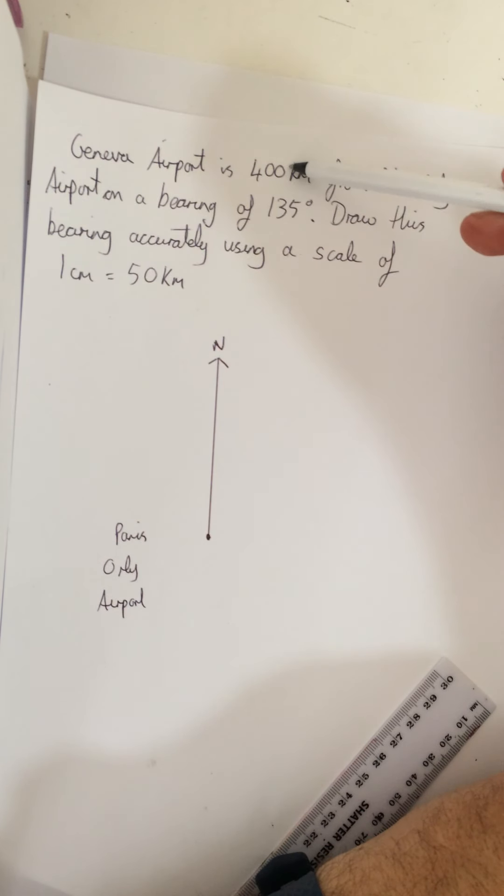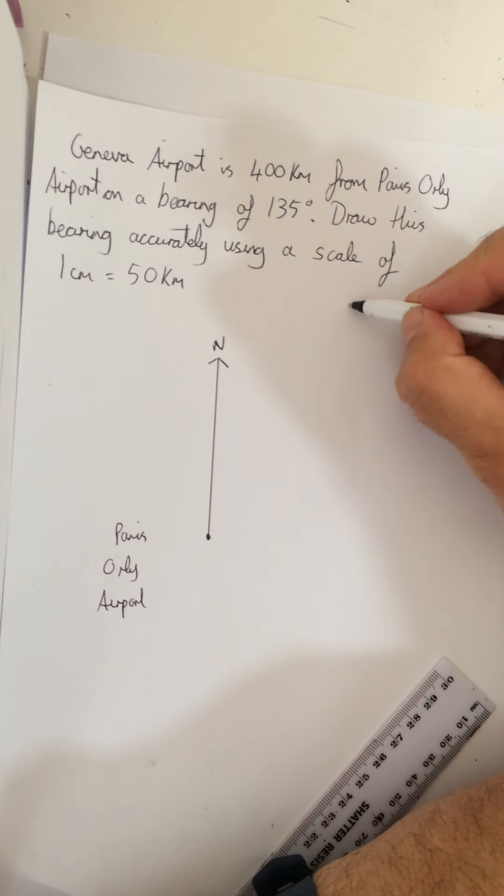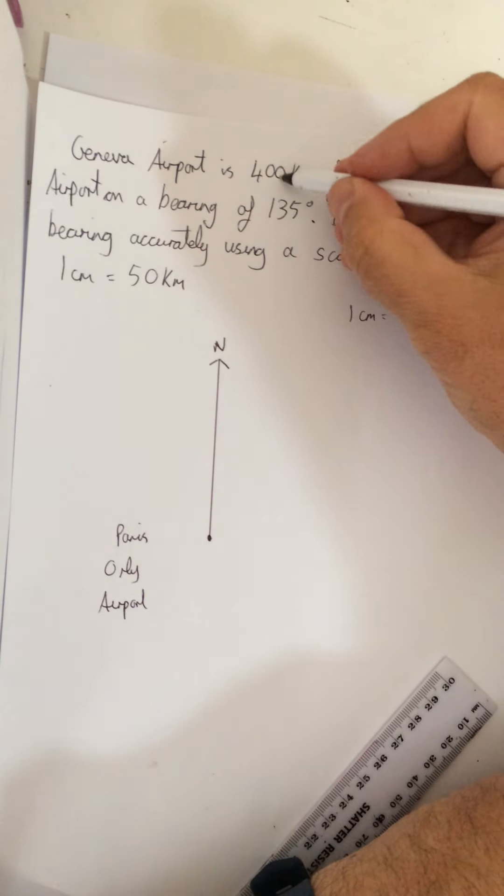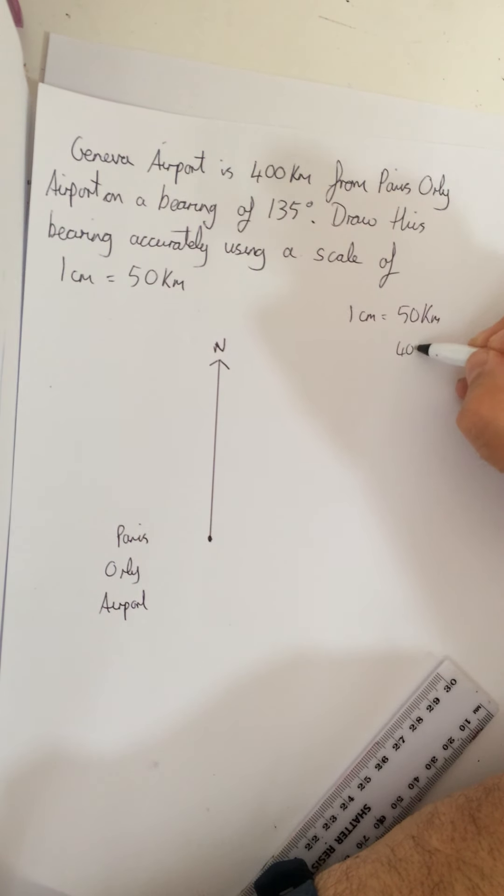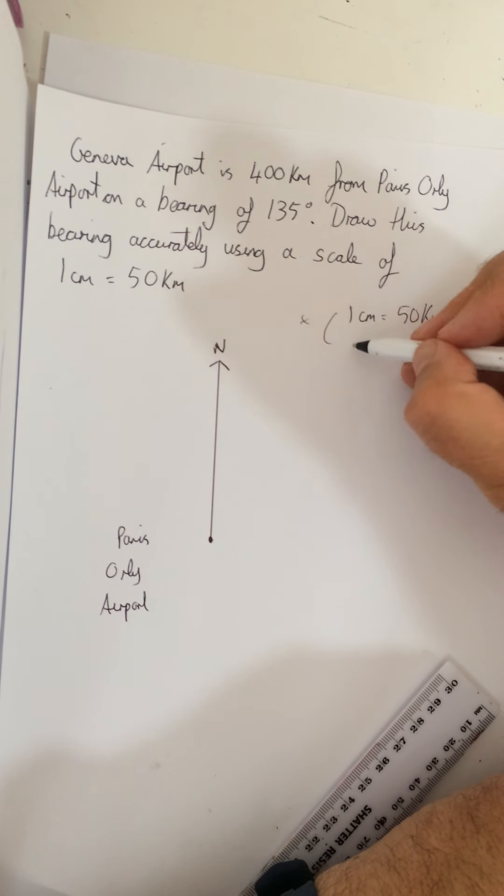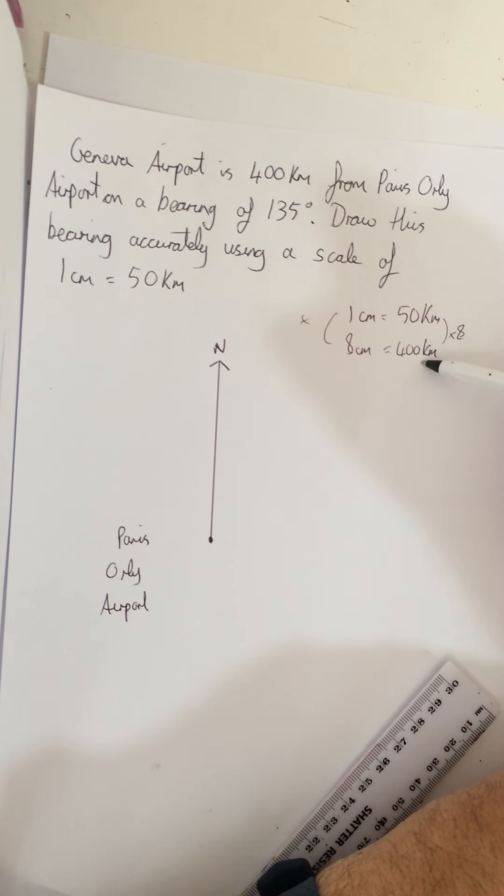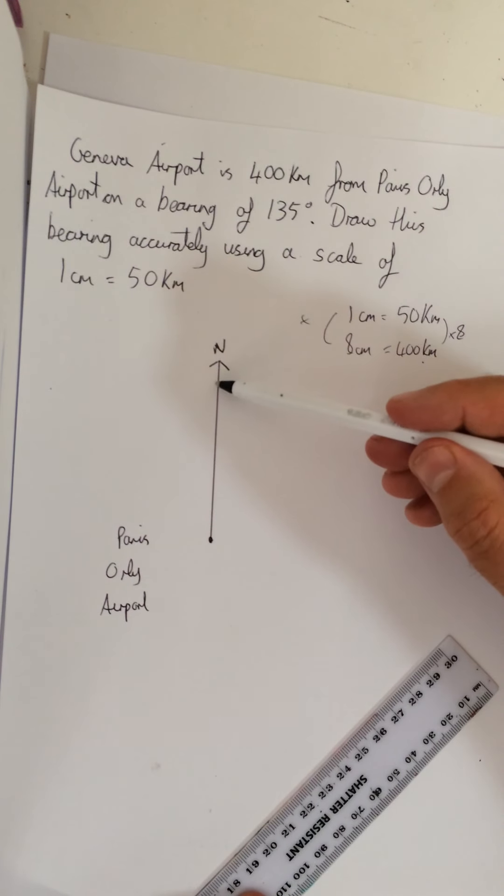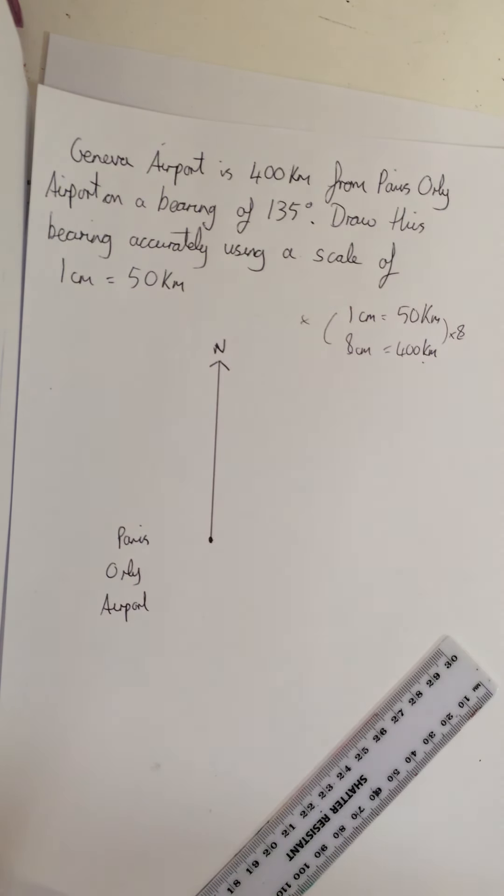Now, let's look at what our scale is. So we know the Geneva airport is 400 kilometers away. So we know one centimeter equals 50 kilometers. It is 400 kilometers away. I know we did this last time. So how am I going to get from there to this? Timesing by eight, I believe. Yes. Timesing by eight. So eight centimeters. So on my map, 400 kilometers will be eight centimeters. That's just giving us our north.